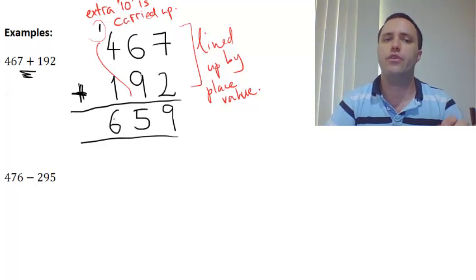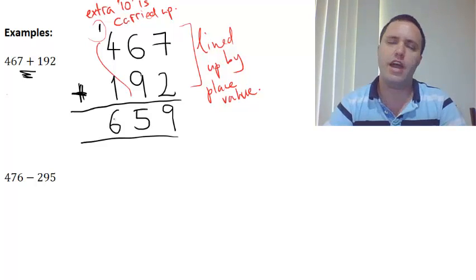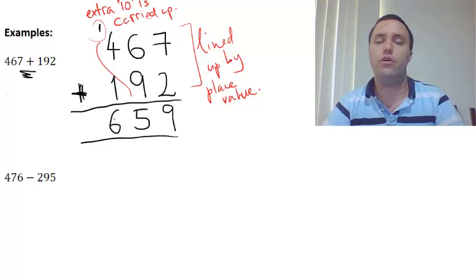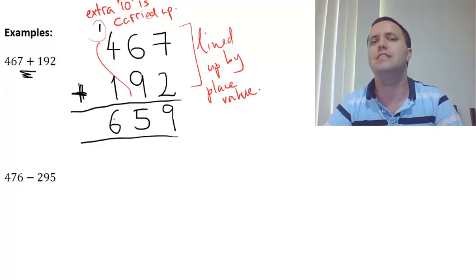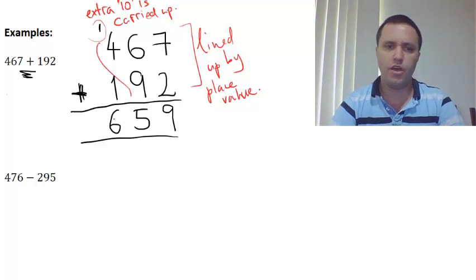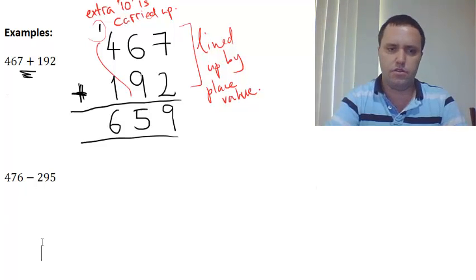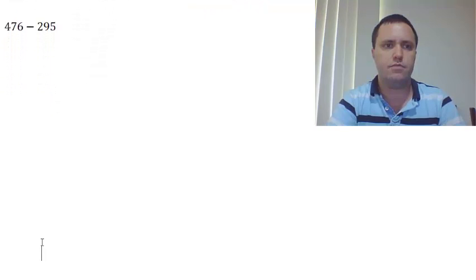So 659 is the answer of 467 plus 192. So that's how you carry out your addition algorithm. Same thing for adding any numbers together with whole numbers anyway. Decimals is pretty much the same, but we won't be visiting that until later in the year. Okay, now let's have a look at the subtraction algorithm.